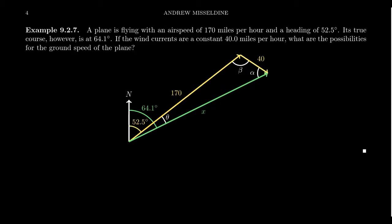What do we know about the true course? We know its direction. We don't know the ground speed. That is the magnitude of the true course there. So we have this vector right here going along. The direction is 64.1 degrees, but we don't know the ground speed. And so we want to consider what that's going to be.